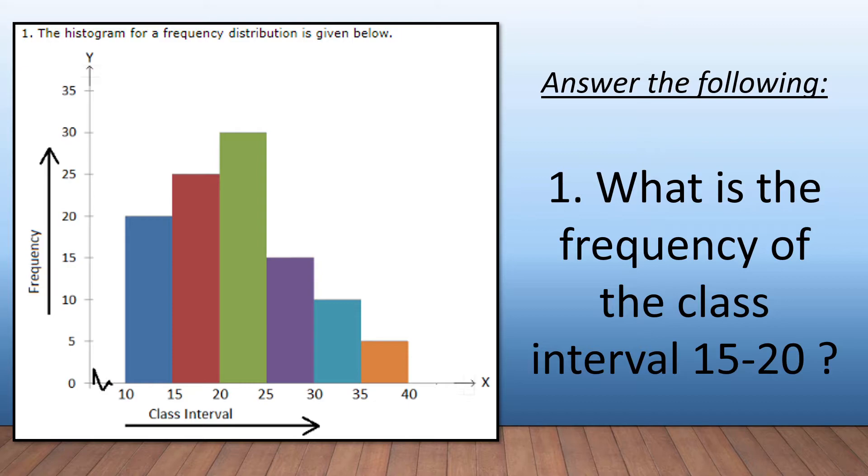So you can broaden your understanding. Here we have a histogram showing us frequency and the class intervals moving on this particular axis over here. You might get something like this in an exam or test situation, and they might ask you, based on this, what is the frequency of the class interval 15 to 20? Here we see our class interval 15 to 20, and we can see that frequency is going to be 25.